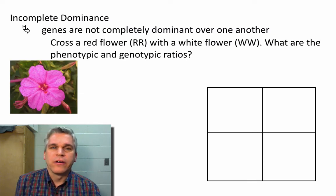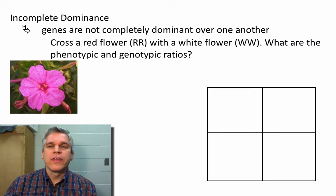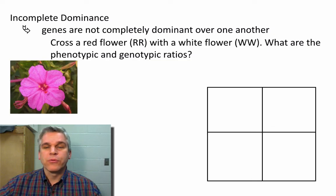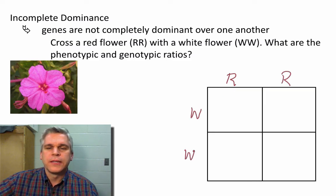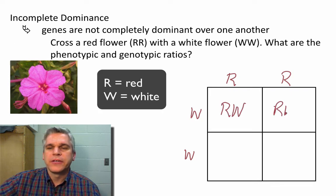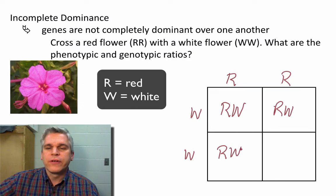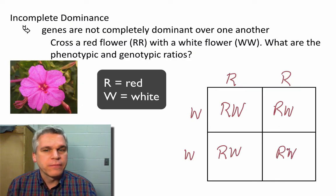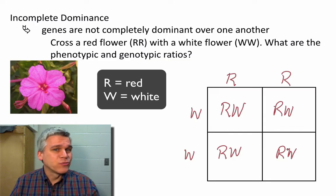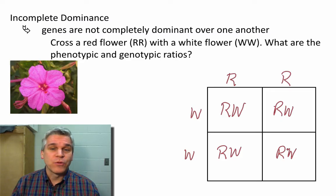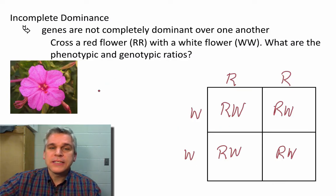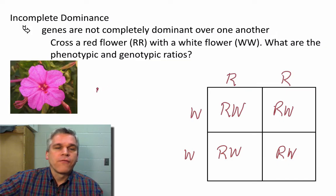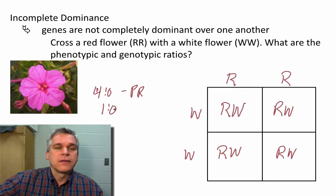Let's do an example of a Punnett square using incomplete dominance. We want to cross a red flower with a white flower, and it's asking for the phenotypic and genotypic ratios. Take one parent and separate the two alleles, take the other parent and separate the two alleles, and we show all the different possible combinations. Notice I'm using two different letters here — I don't want to use a capital R and a little r, because that would show that the little r is recessive, and white is not recessive. It is incompletely dominant. When R and W get together, we end up with a pink flower. The phenotypic ratio in this case is four pinks and nothing else — so four to zero, or we can reduce that to one to zero.